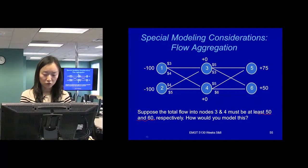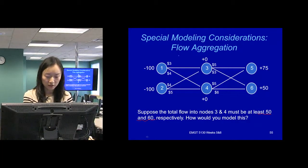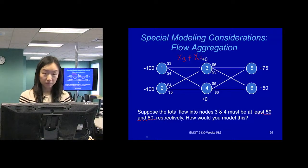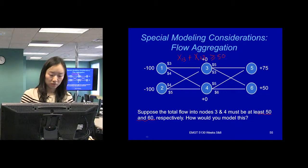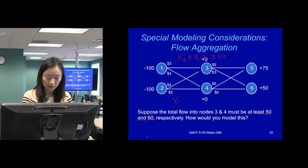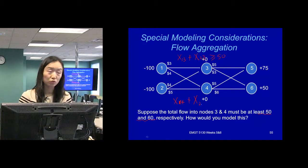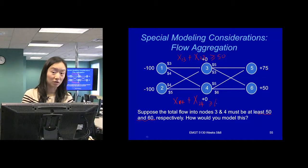Suppose the total flow into node 3. Let's look at node 3. Node 3's total inflow is x1,3 and x2,3. It says the total flow into this must be at least 50, so greater than or equal to 50. And then for node 4, we would write x1,4 plus x2,4 need to be greater than or equal to 60. So these would be two constraints that we add for this problem.